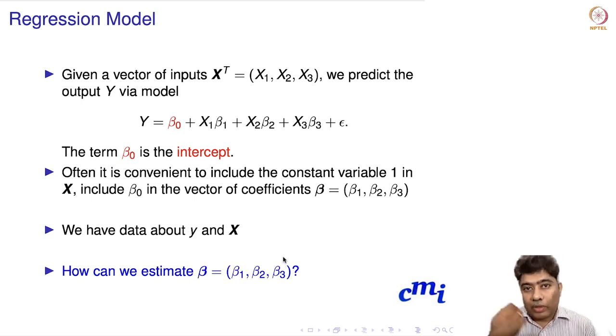Given a vector of inputs x1, x2, x3, we predict the output Y as Y equals beta naught plus x1 beta 1 plus x2 beta 2 plus x3 beta 3 plus epsilon. The term beta naught is the intercept.